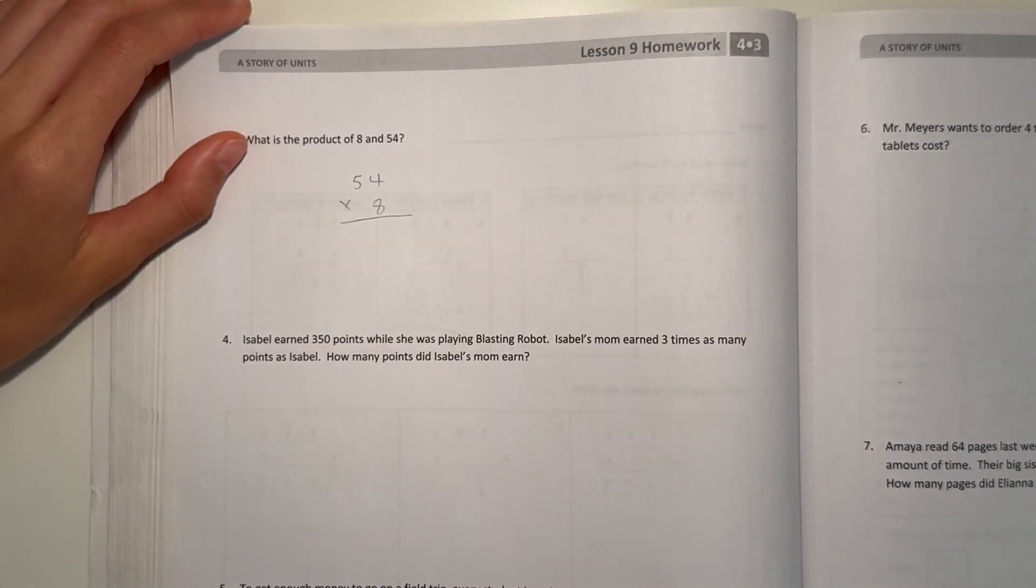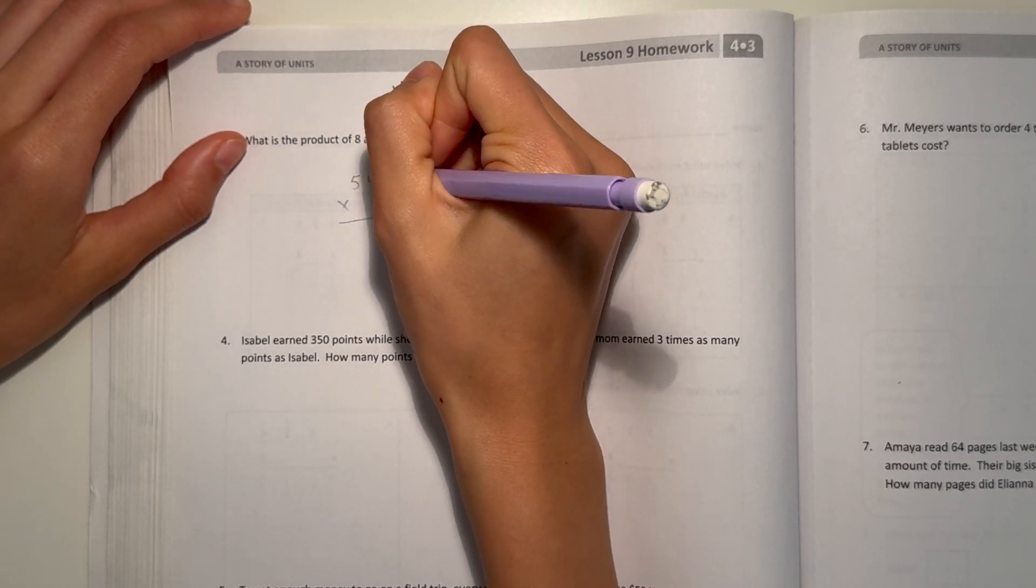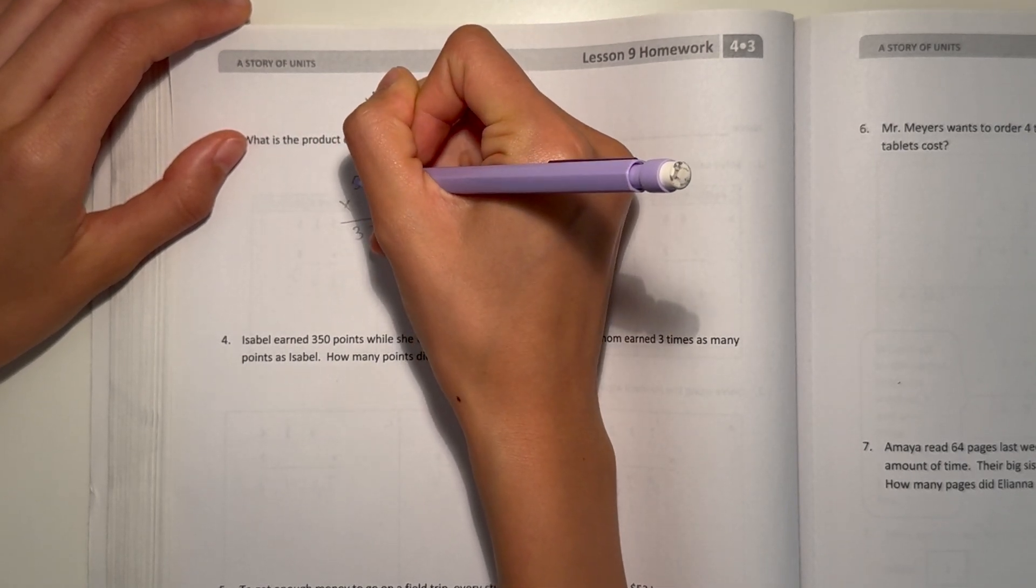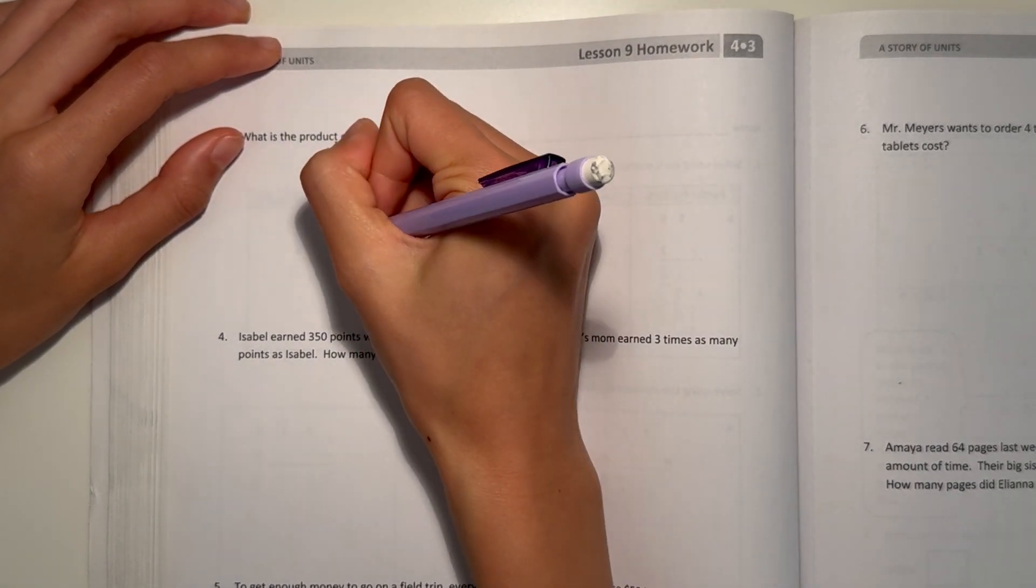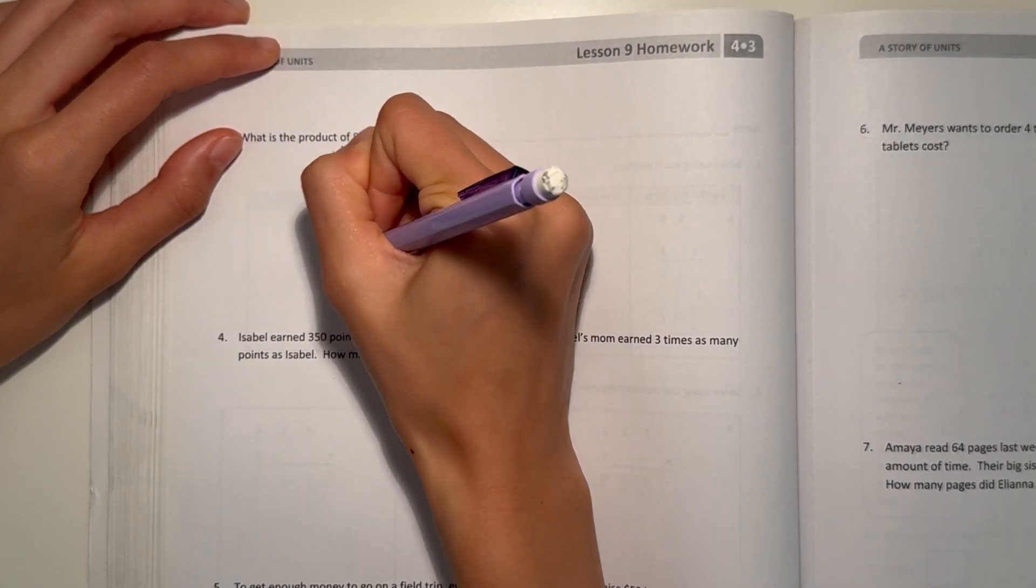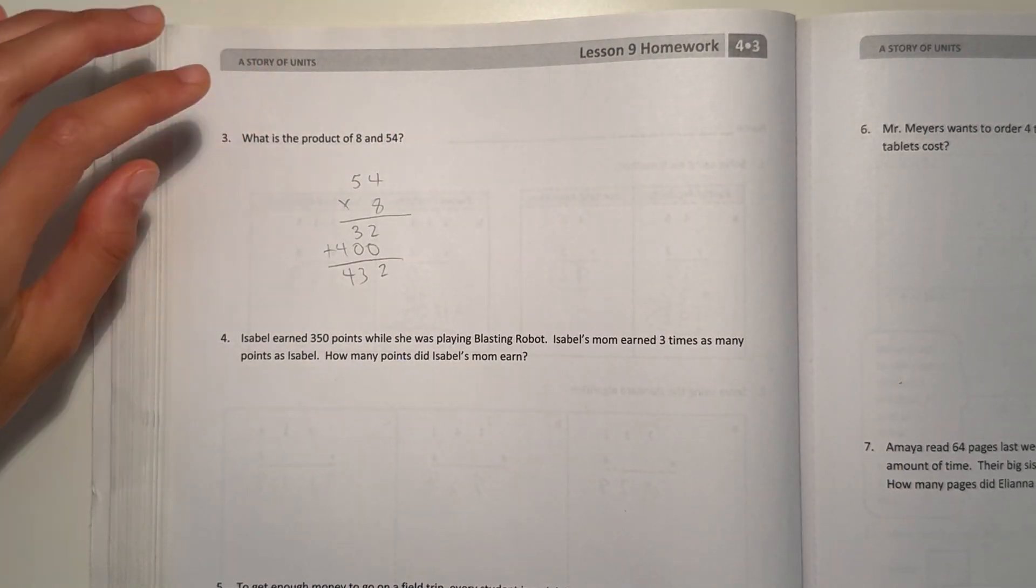Usually we do standard algorithm, but 8 times 4 is 32, and 8 times 50 is 40, by the 0 is 400. Let's add it all together, our answer is 432.